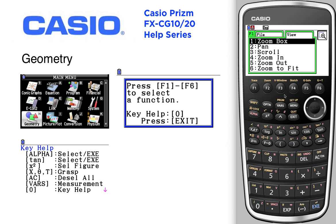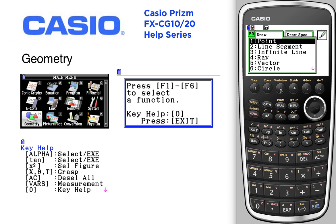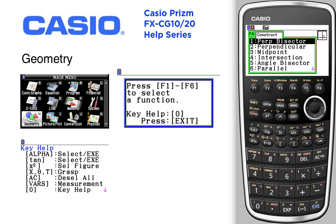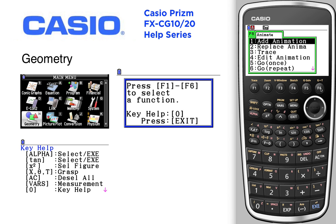Here's where we can create a new view. F2 is for editing, F3 is when we start drawing and drawing special. F4 is for constructions, F5 is for transformations, F6 is to animate. Then here are your options: adding text, number format, clearing constraints, and different properties.